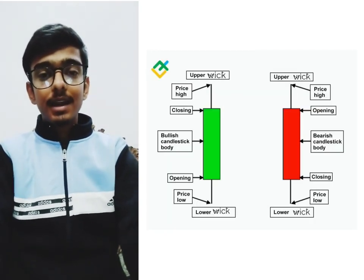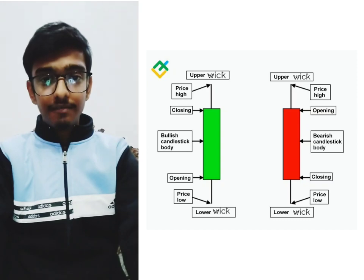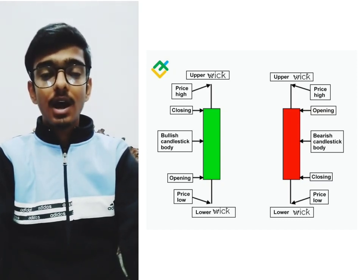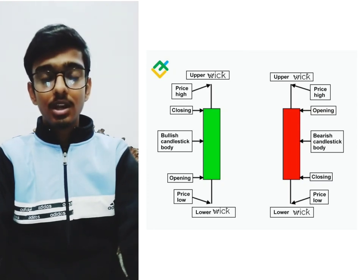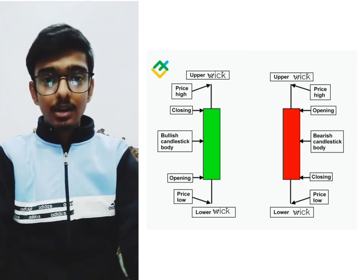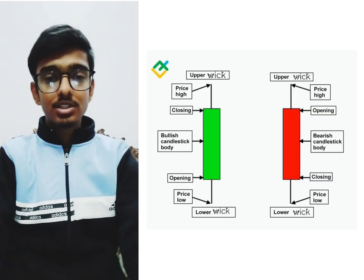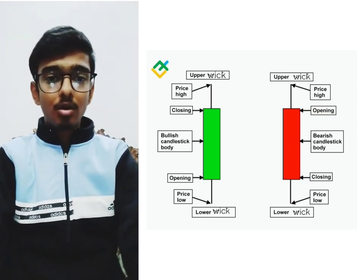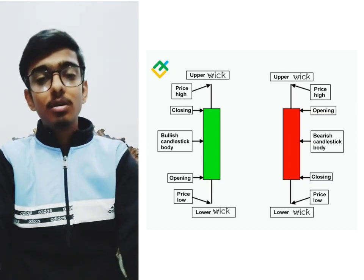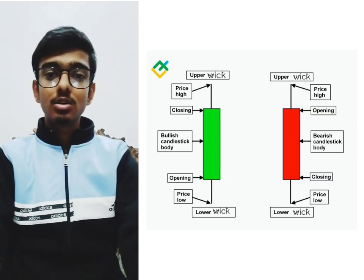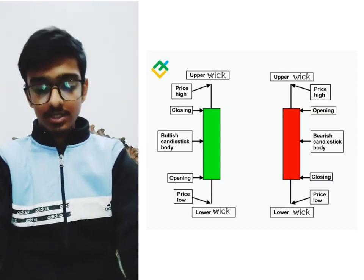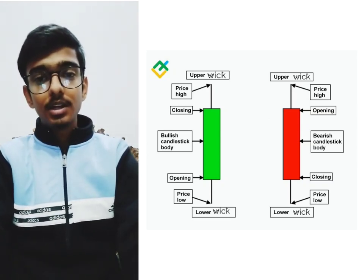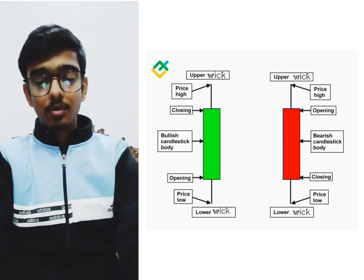Now, the structure of a candle. A candle has wicks and a body. The upper wick represents the highest price of the share during a time period, and the lower wick shows the lowest price of the share during a particular time period. The upper and lower points of the body show the opening and closing points. A candle has four points: opening point, closing point, highest point, and lowest point.